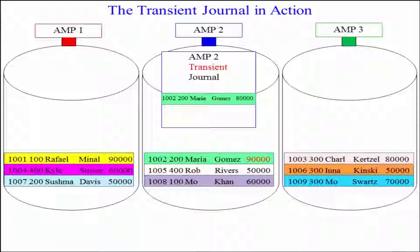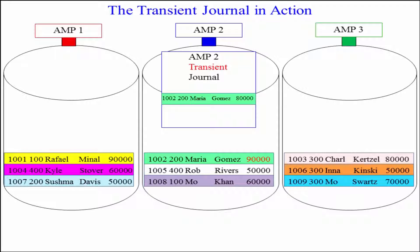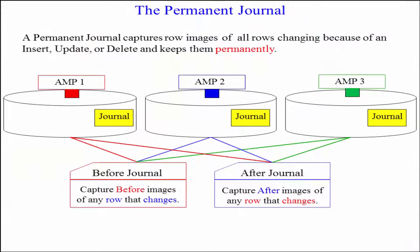The transient journal is just a temporary picture for the life of the transaction. A permanent journal is going to last permanently.